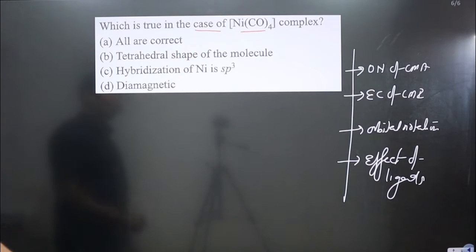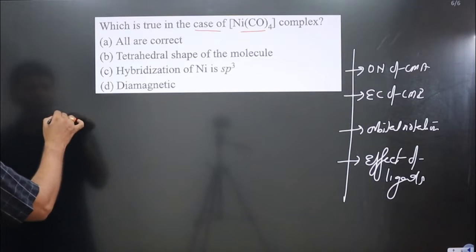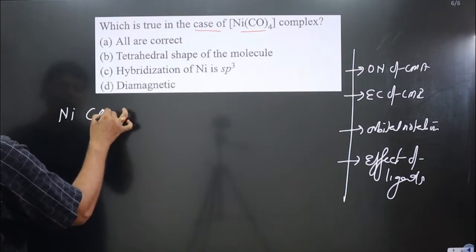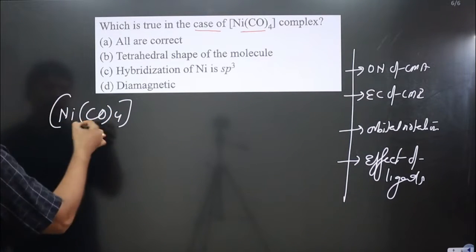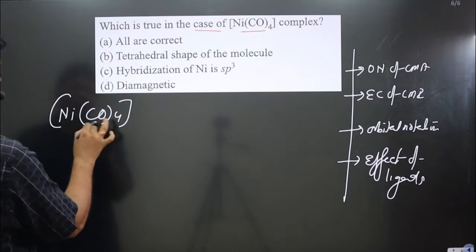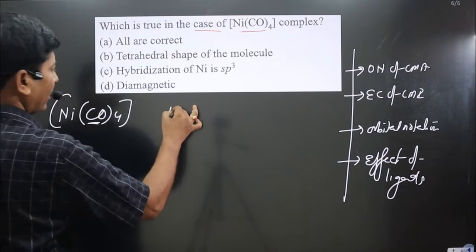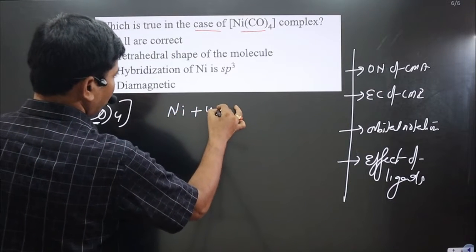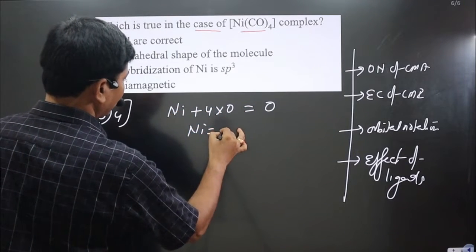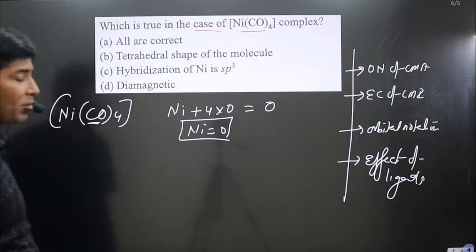Let's calculate the oxidation number of the central metal atom. The complex is neutral with overall charge zero. Carbonyl group is a neutral ligand. So we have Ni + 4×0 = 0. Nickel is present in zero oxidation state.